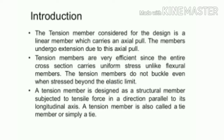This is one of the common types of force transmitted in a structural system. Tension members are very efficient since the entire cross section carries uniform stress, unlike flexural members. Hence the design is not affected by the type of section used — plastic, compact, or semi-compact. Common examples include bottom chord of pin-jointed roof trusses, bridges, transmission line and communication towers, and wind bracing systems in multi-story buildings. A tension member is designed so that the applied axial load is parallel to the longitudinal axis of the member, and hence it is also called a tie member or simply a tie.